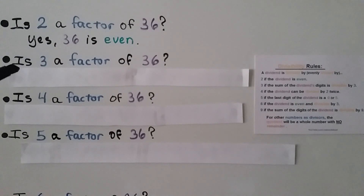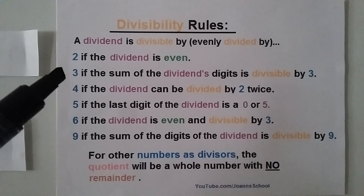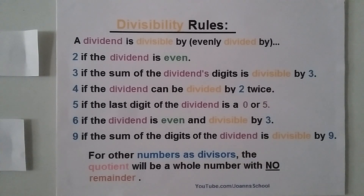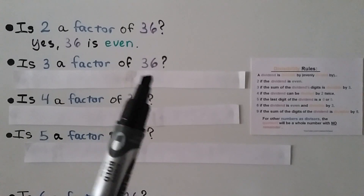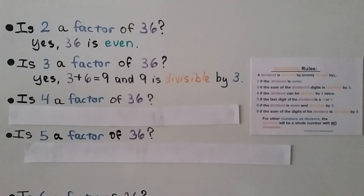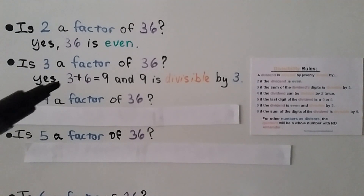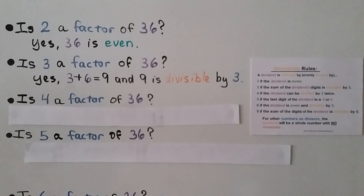Is 3 a factor of 36? The divisibility rule for 3 says a number is divisible by 3 if the sum of the digits is divisible by 3. We take 3 plus 6 and get 9. 9 is divisible by 3, so 3 is a factor of 36.